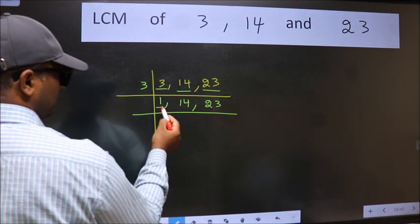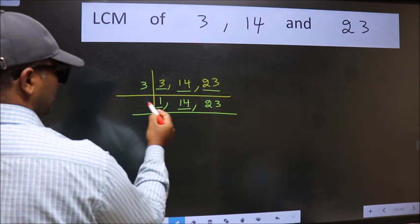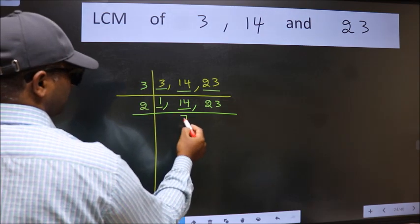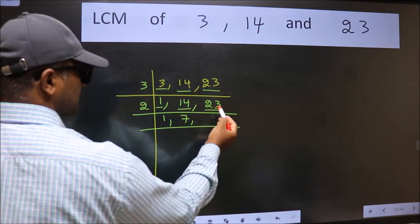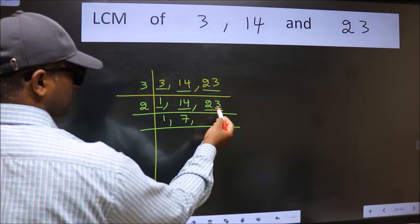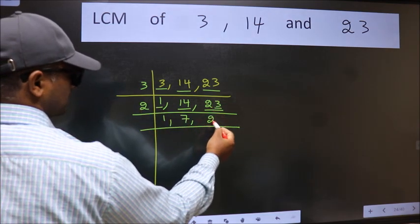Now we got 1 here so focus on the next number 14. 14 is 2 times 7 equals 14. The other number 23, last digit 3, not even, so this number is not divisible by 2 so we write it down as it is.